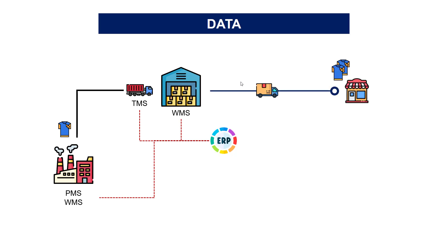Finally, when you are delivering your stores, you can track your trucks using the transportation management system. The point of sales is a system that keeps tracking all the sales transactions inside the stores, so you can have end-to-end visibility from the factory to the store.